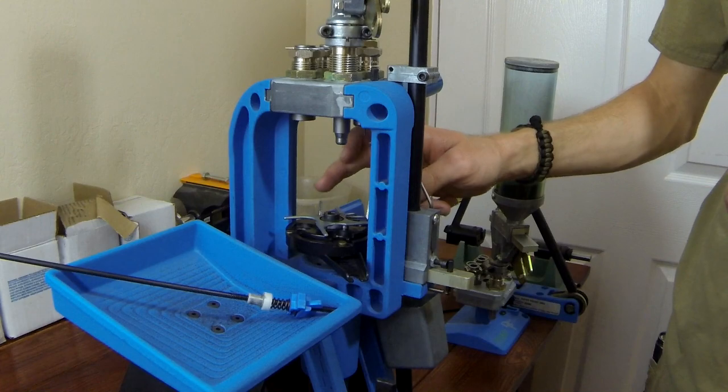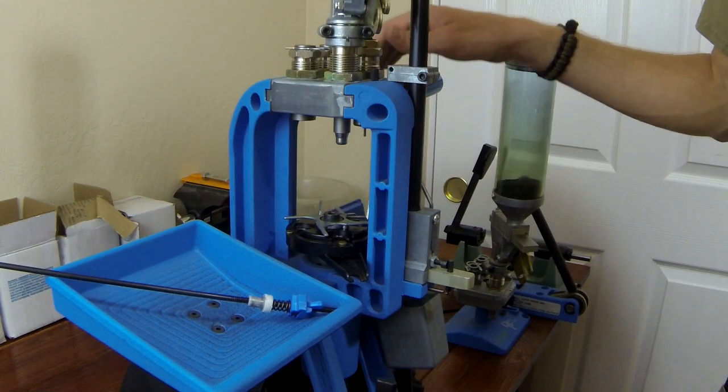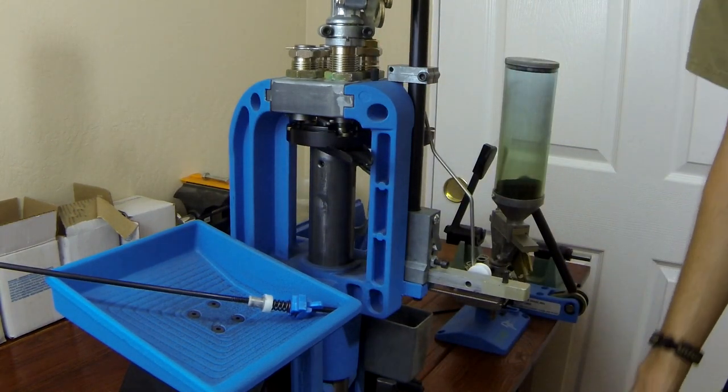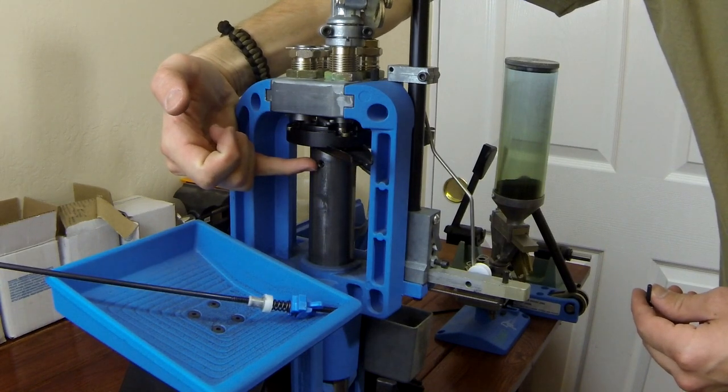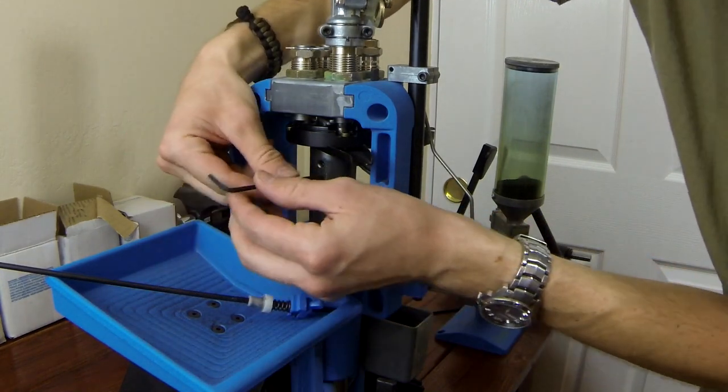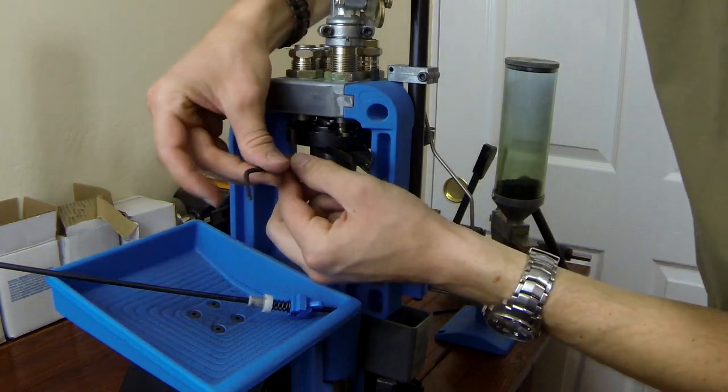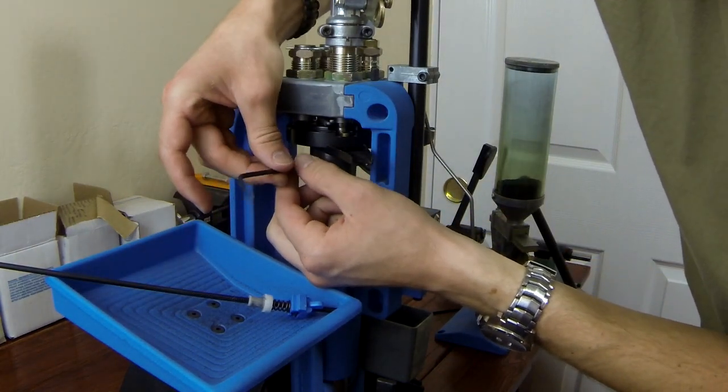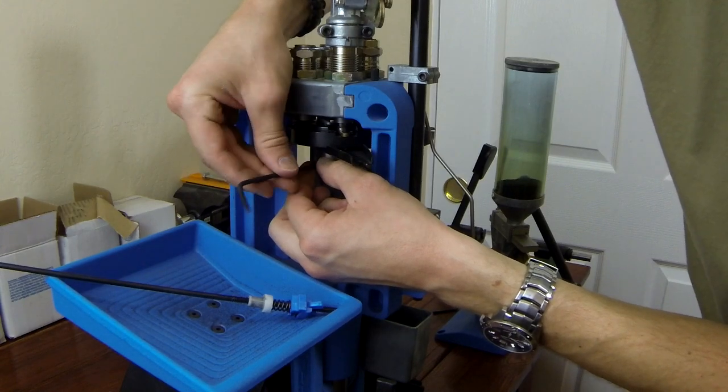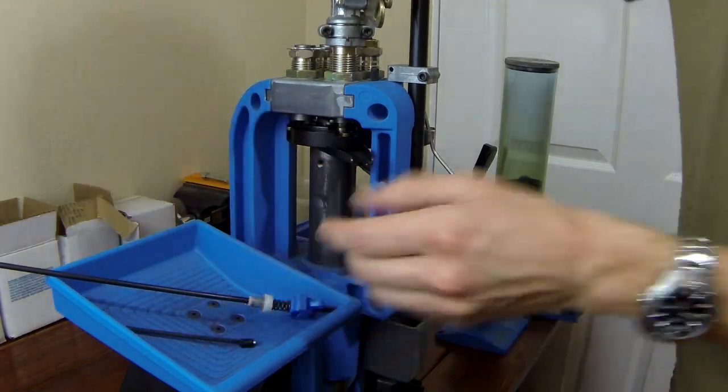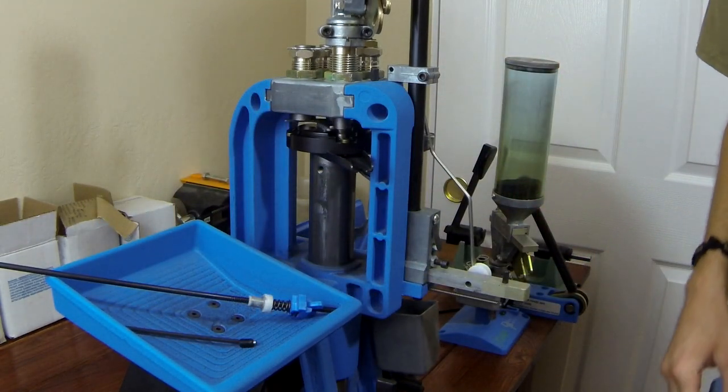And now we're going to go ahead and change out the shell plate. So first things, we're going to raise this up. There's a single detent right here with threads on it that you have to remove. So that set screw keeps things lined up. 1/8th Allen. You can back it out just a little bit if you want. I prefer to just remove it completely so that I don't accidentally try to lower it with it protruding slightly.